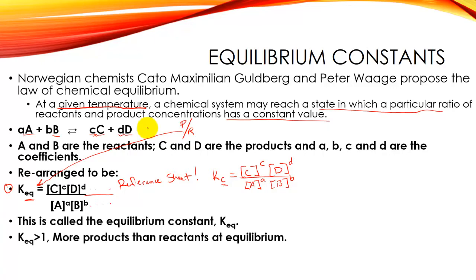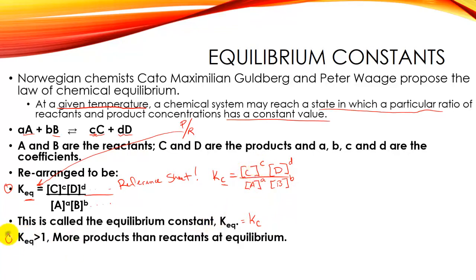This is what we call the equilibrium constant. Most textbooks report it as KEQ; the AP reference sheet calls it KC because we're working with concentrations — that's what the brackets mean. If you have more products, you'd have more terms in the numerator; if you have more reactants, more in the denominator. We just continue adding terms for as many reactants or products as we have.